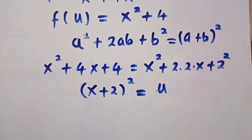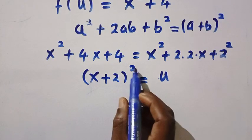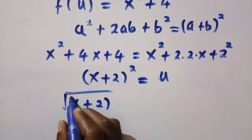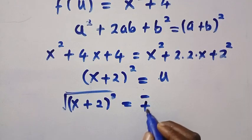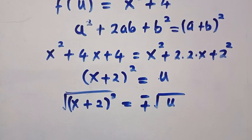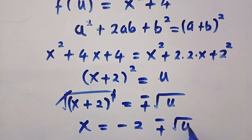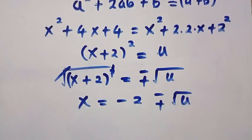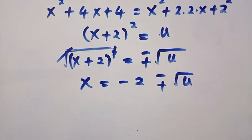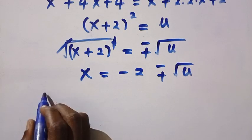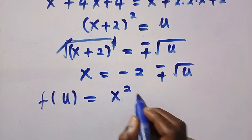Next, let's find the square root of both sides to cancel the squared. By taking square root, we have the square root of (x plus 2) squared equals plus or minus the square root of u. This gives us x equals minus 2 plus or minus the square root of u, making x the subject of the formula. Then, coming back to f of u equals x squared plus 4.